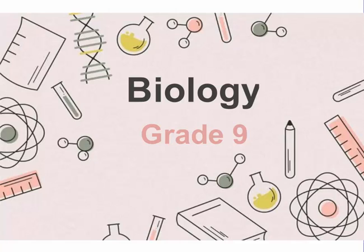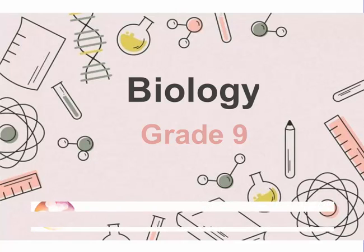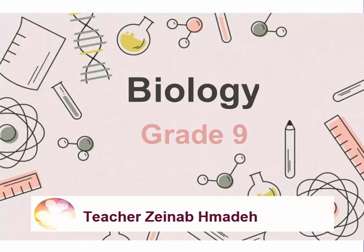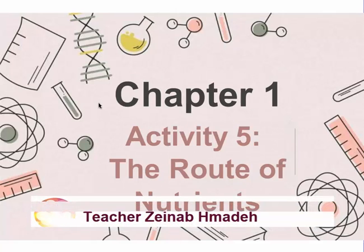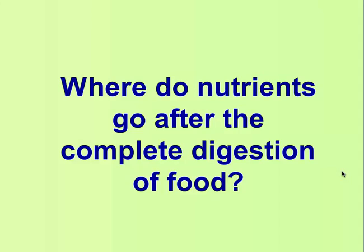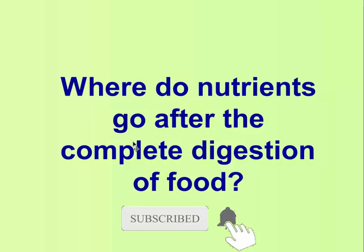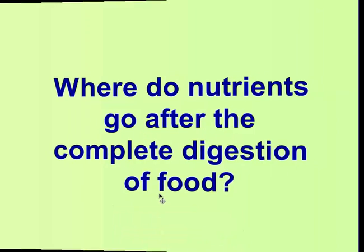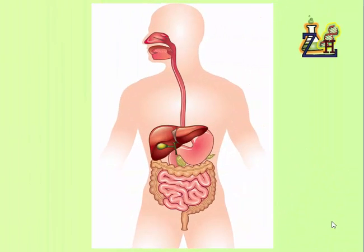Assalamu alaikum warahmatullahi wabarakatuh. Welcome to a new video for a summary of a new lesson in grade 9 biology. Today our video is a summary for activity 5 of chapter 1, titled 'The Route of Nutrients.' The main question in this activity is: where do nutrients go after the complete digestion of food? Before we start answering this question, let us discover the organs of the digestive system.